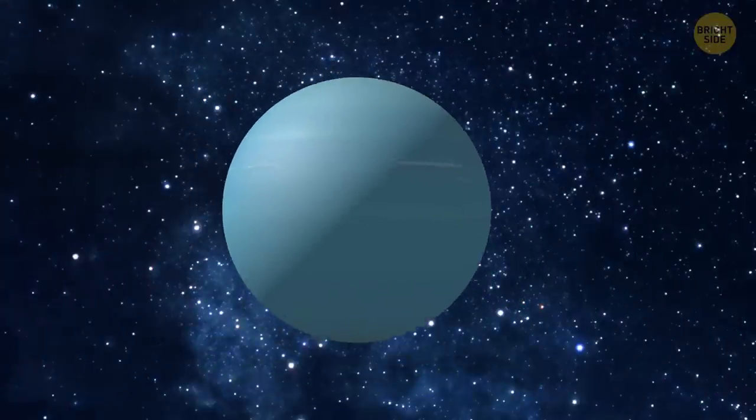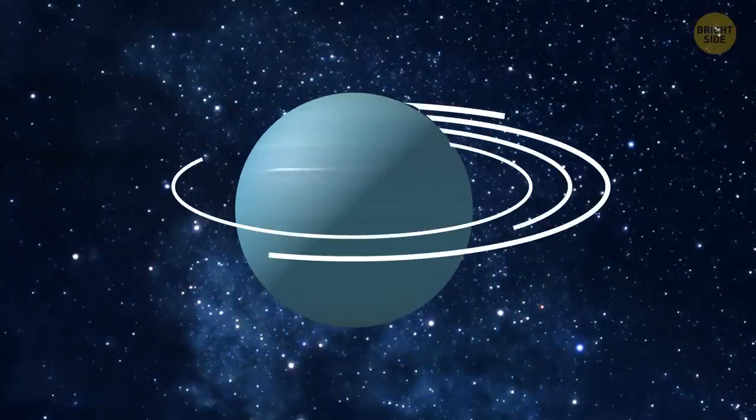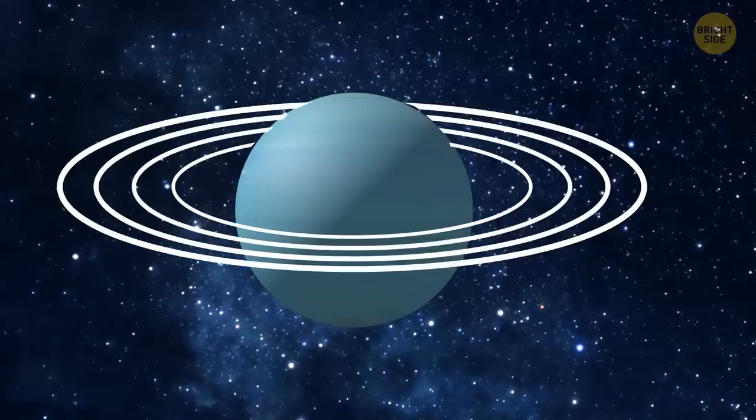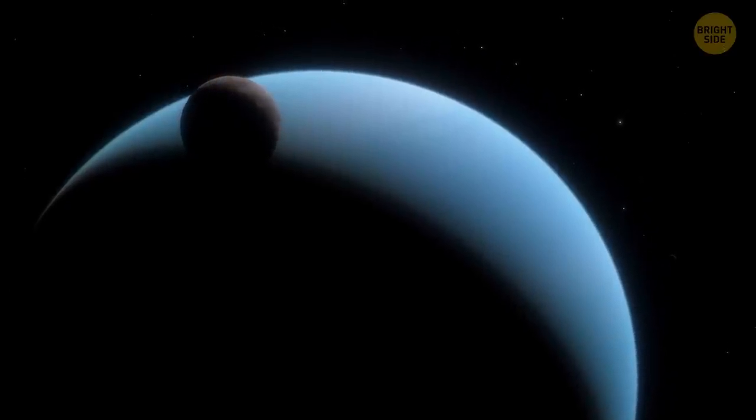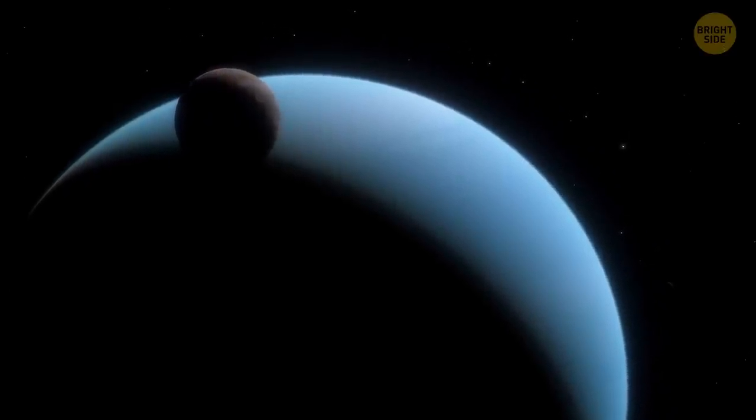If Uranus had the same rings, they could prevent the planet from toppling over. The way to solve Uranus's tilting problem might be for the planet to get its rings back. They would help Uranus keep its balance. On the other hand, hey, we like it just the way it is.